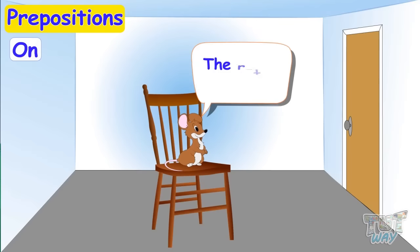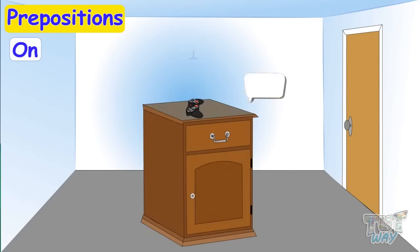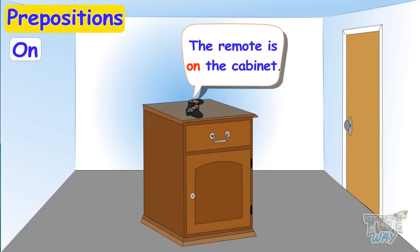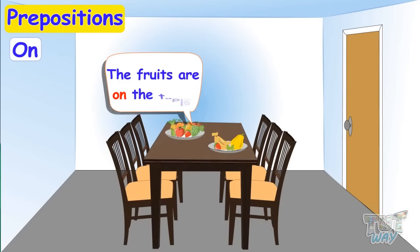The rat is on the chair. The pen is on the floor. The remote is on the cabinet. The fruits are on the table.